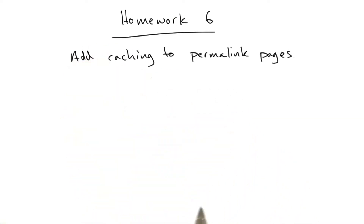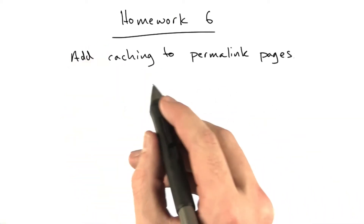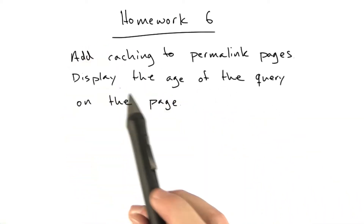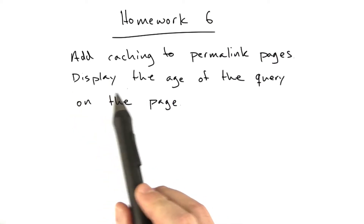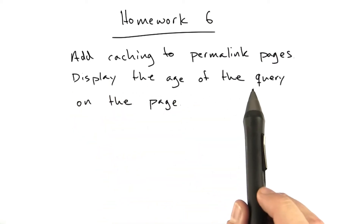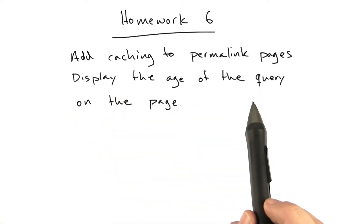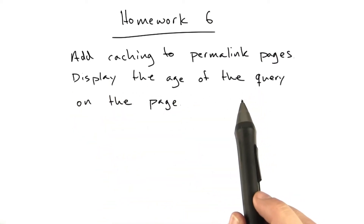The next thing to do is add the same caching to the permalink pages. Specifically, the same way we did on the front page, display the age of the query that generated that page somewhere on the page.